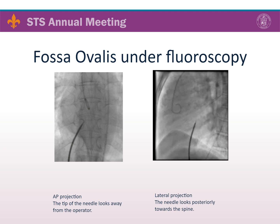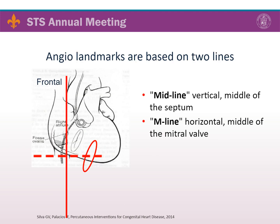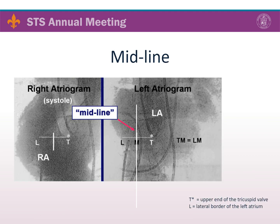The transseptal puncture site is at the intersection of these two lines. Definition of the midline requires placement of a pigtail catheter in the aortic root, as well as a right atriogram with levophase. The midline is the halfway point between the lateral border of the left atrium and the upper border of the tricuspid valve. Definition of the M line requires placement of a pigtail catheter into the left ventricle, and performance of a ventriculogram will define the mitral valve and subsequently the horizontal M line.